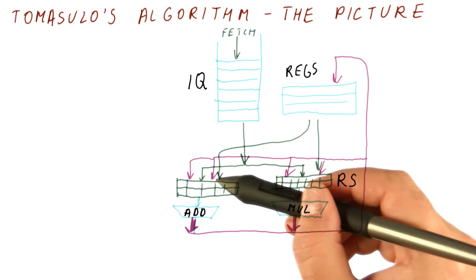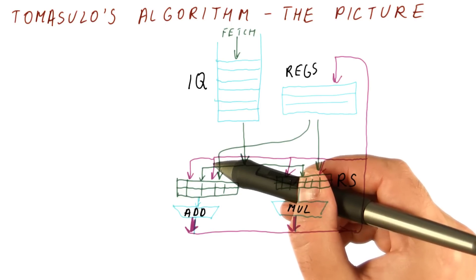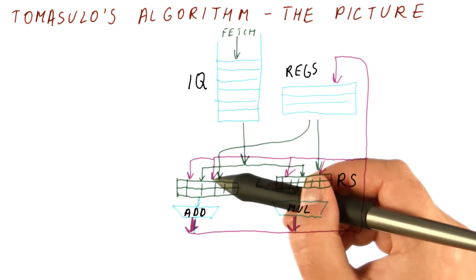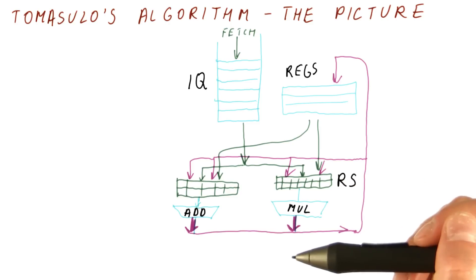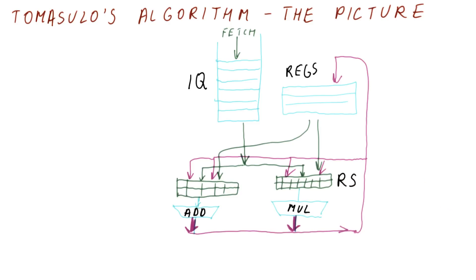You need to compare what's being broadcast. Its name needs to be compared to both of the inputs that you are waiting for. Then you select one or both of them, or none of them, if this is not the value you're waiting for.